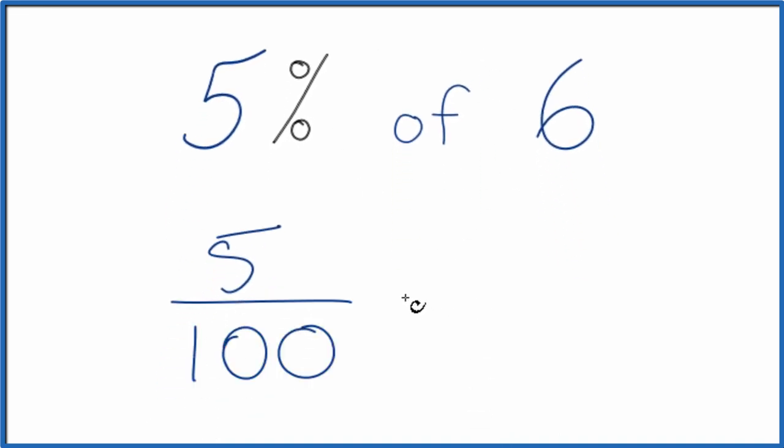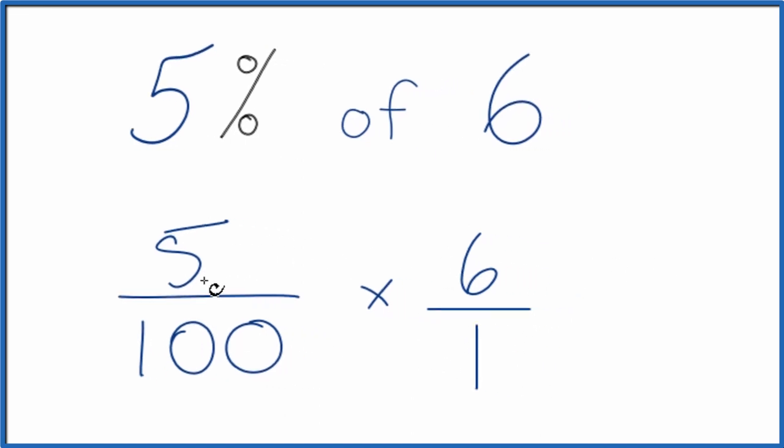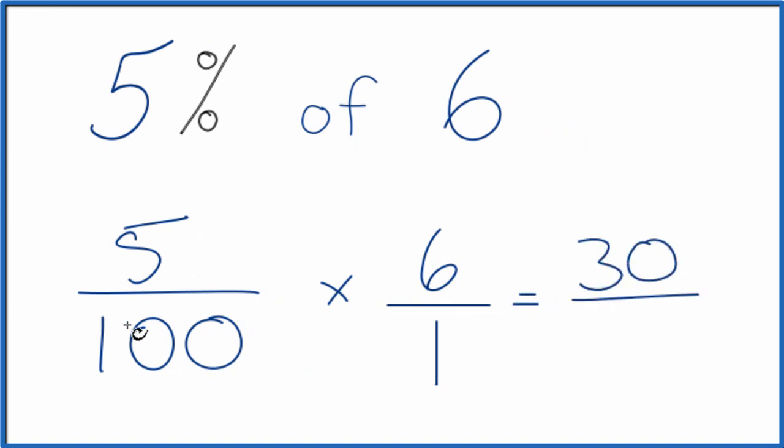Then we can think of the of as multiplication, and 5 over 100 times 6, I'm going to call it 6 over 1. It's still 6 because we're just dividing by 1, but it aligns the numerators and denominators up nicely. 5 times 6 equals 30, and 100 times 1 is 100.